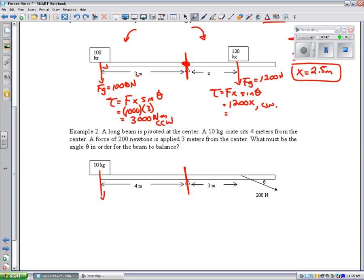It's going to be F times x is 100 times 4. It's 400, and that's trying to make the beam turn this way, so that is counterclockwise.